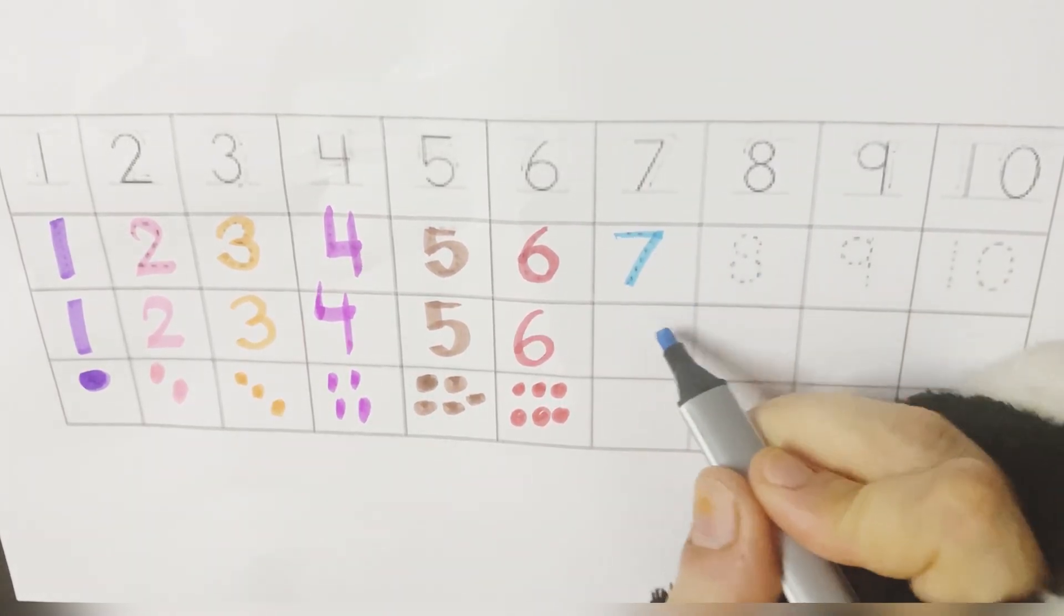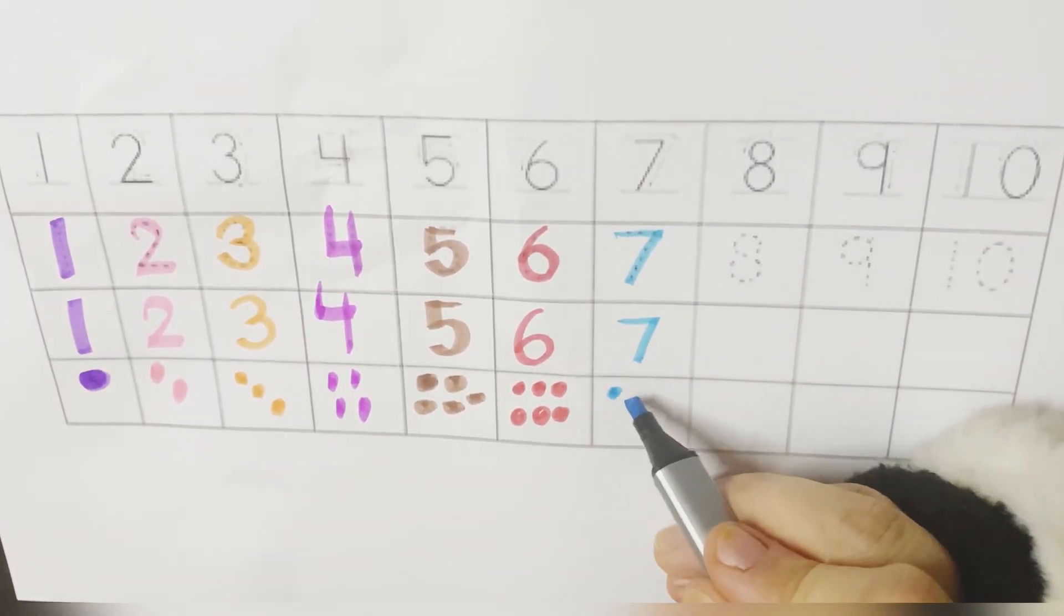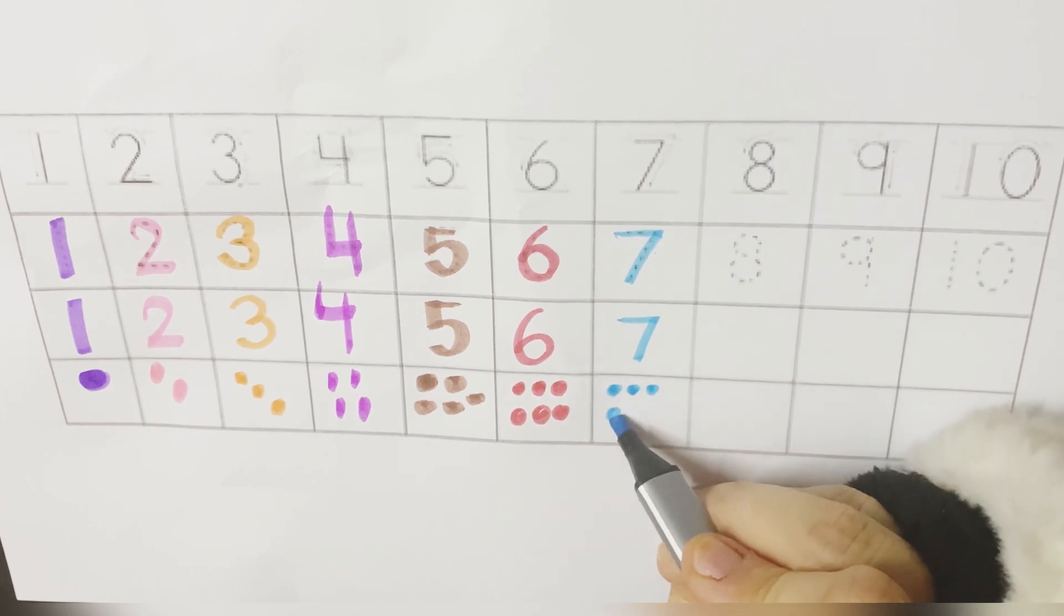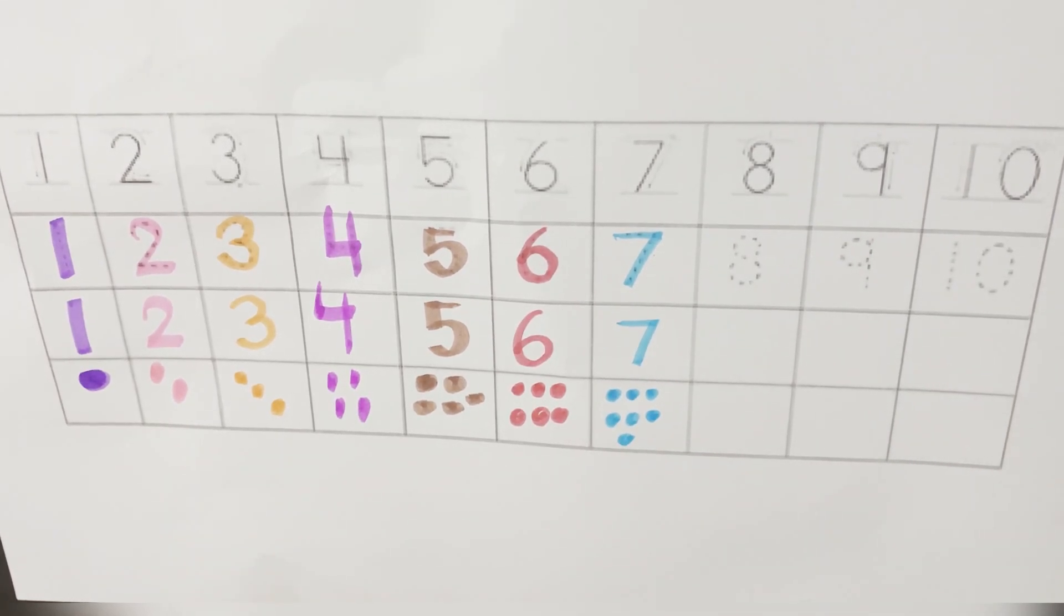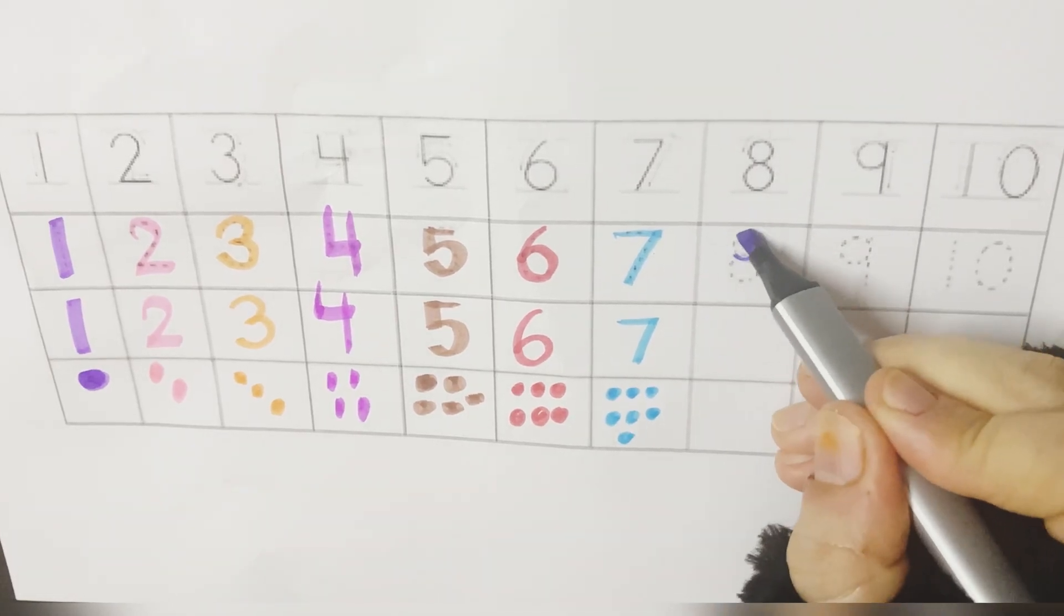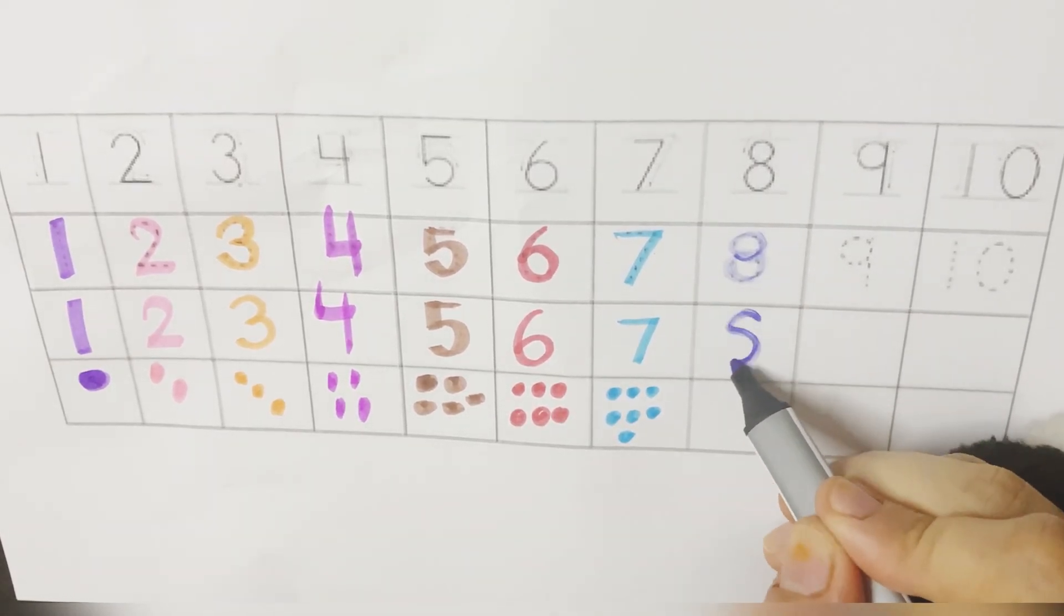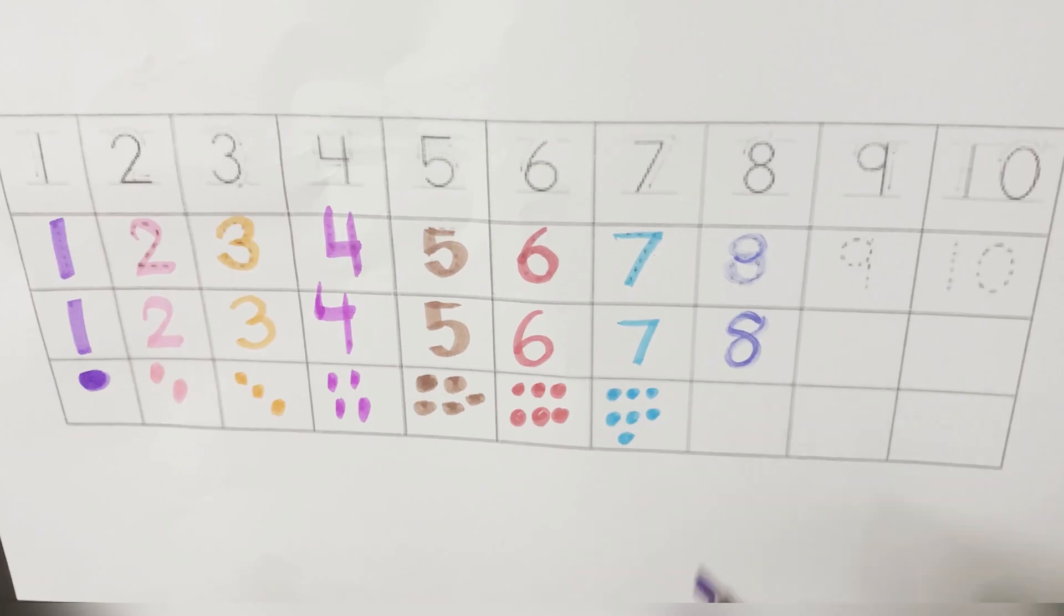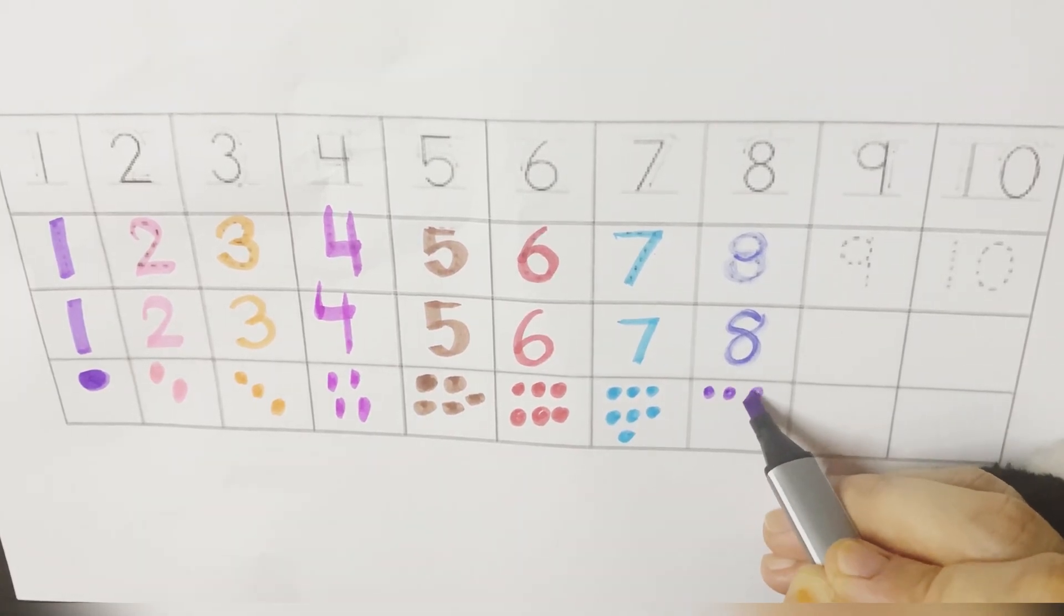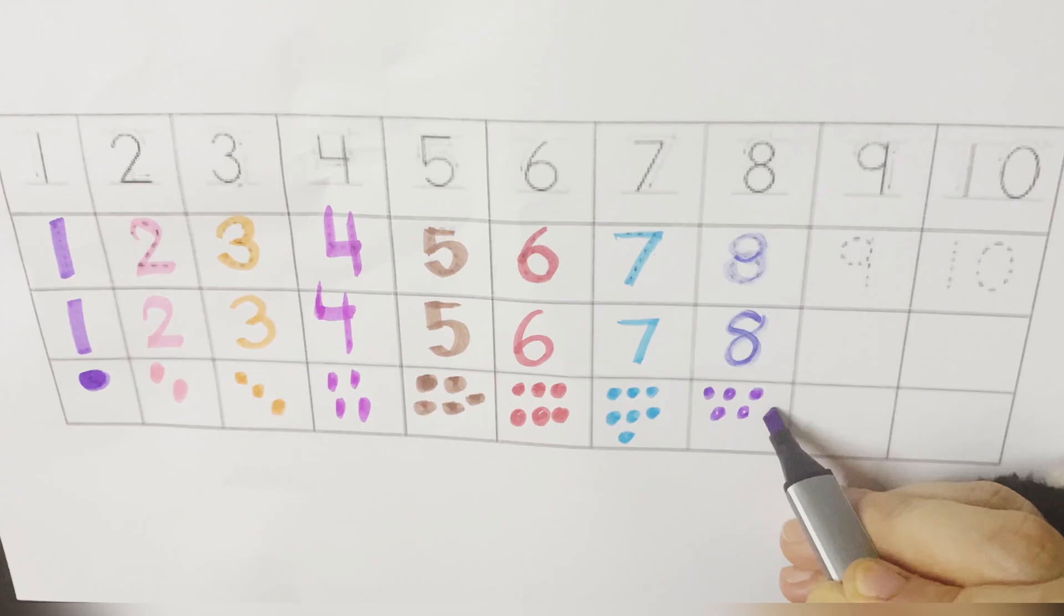Seven. Seven. One, two, three, four, five, six, seven. What comes after seven? Eight. Eight. Let's draw eight dots here. One, two, three, four, five, six, seven, eight.